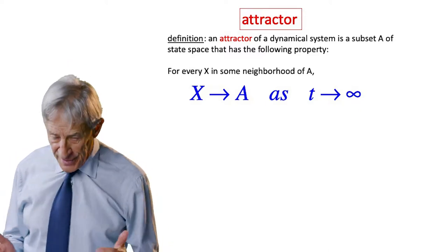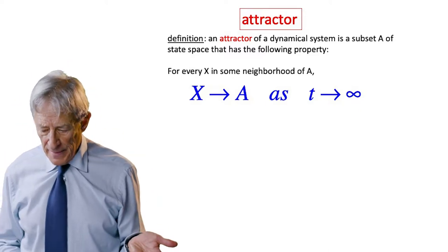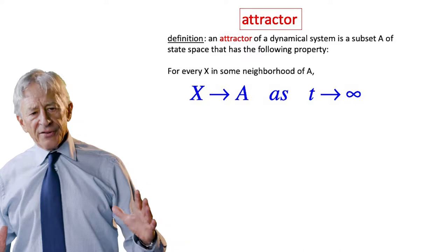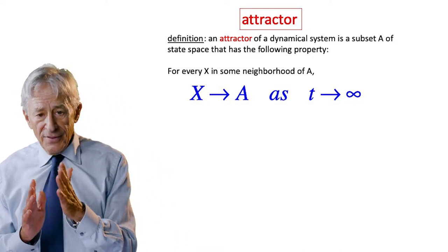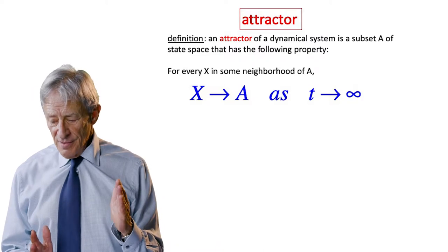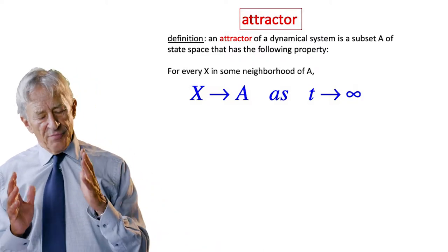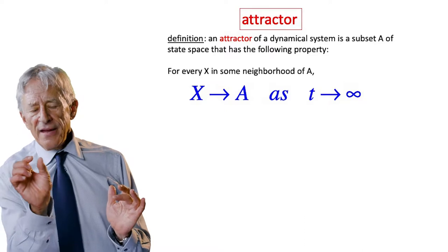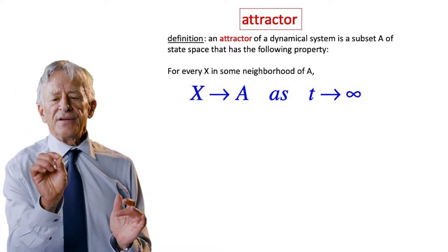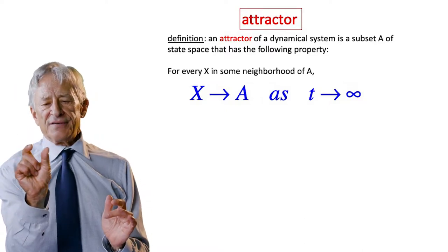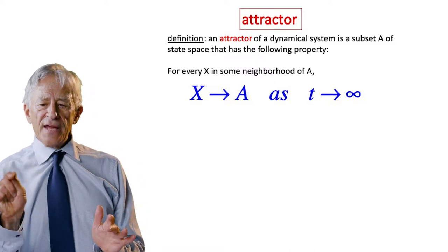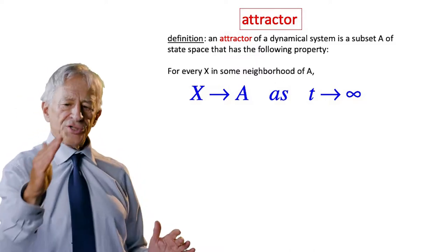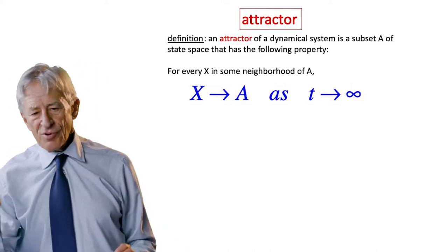And the definition is, as you see, an attractor is a set A in state space that has the property that for every initial condition in a neighborhood of A, that initial condition X will approach A as T approaches infinity.